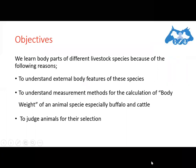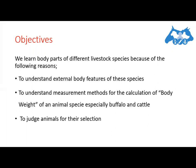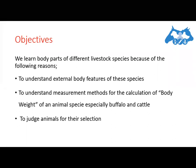The first objective is to understand the external body features of these species. Just as you can identify all your own body parts and describe their functions — nose, cheek, forehead, eyes, ears — similarly, understanding the external body features of livestock species is the main objective. The second objective is that we sometimes use different crude methods for measuring or calculating body weight, especially in cattle and buffalo.